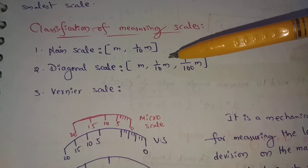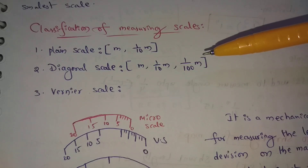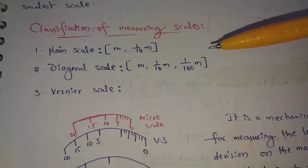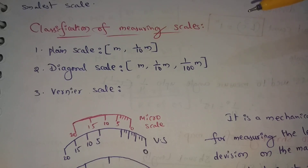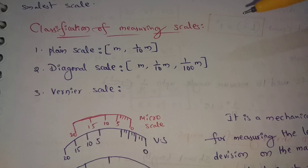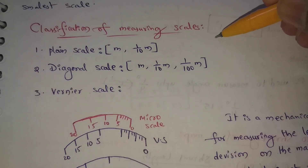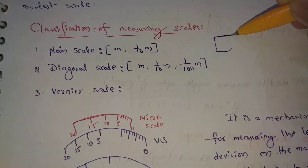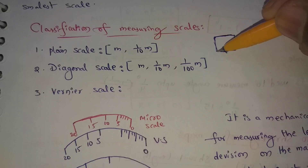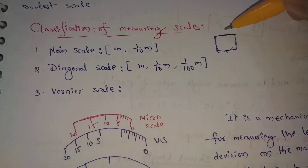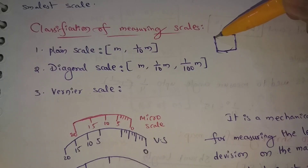The second type is the diagonal scale. On a diagonal scale, it is possible to measure three successive dimensions.